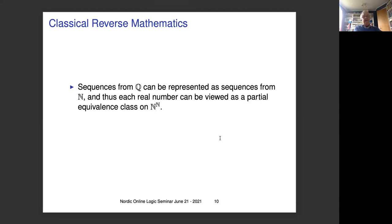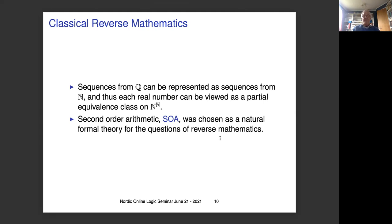Sequences from ℚ can be represented as sequences from the natural numbers, and thus each real number can be viewed as a partial equivalence class on the set of functions from natural numbers to natural numbers. Second-order arithmetic, SOA, was chosen as a natural formal theory for the questions of reverse mathematics, because there we have the integers, the rational numbers, and at least we can represent the real numbers as objects we can talk about in that theory.